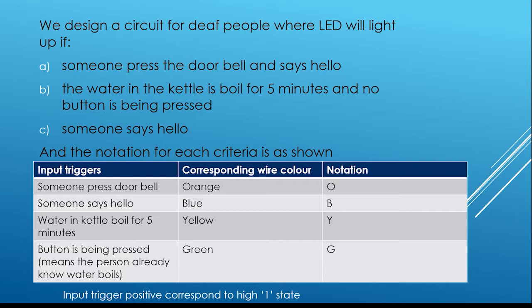The notation for someone pressing the doorbell is O, someone says hello is B, water in the kettle boiled for 5 minutes is Y, and button being pressed is G.